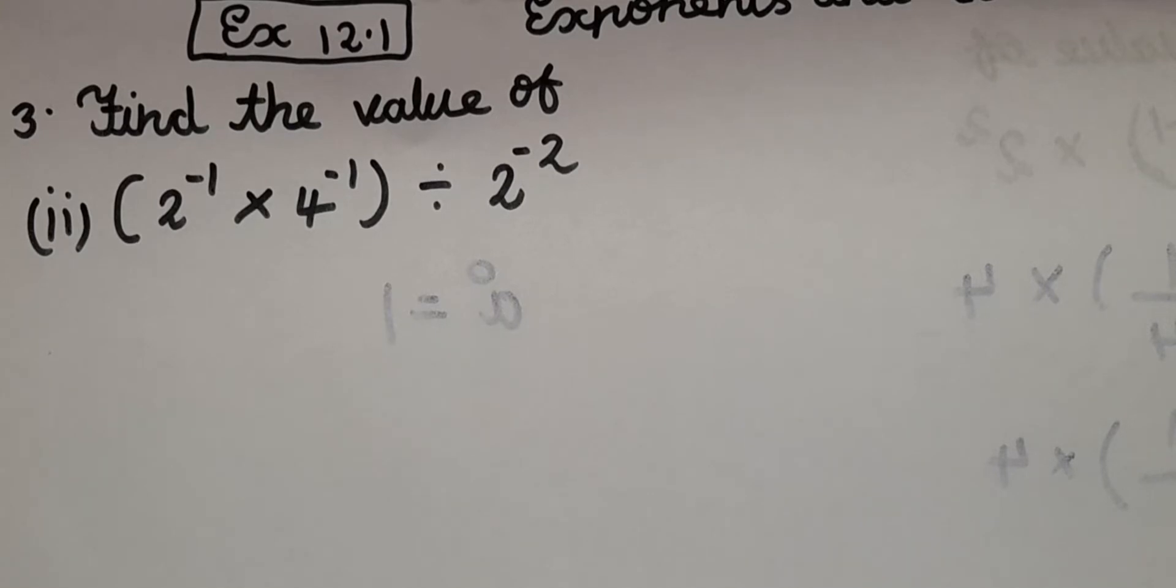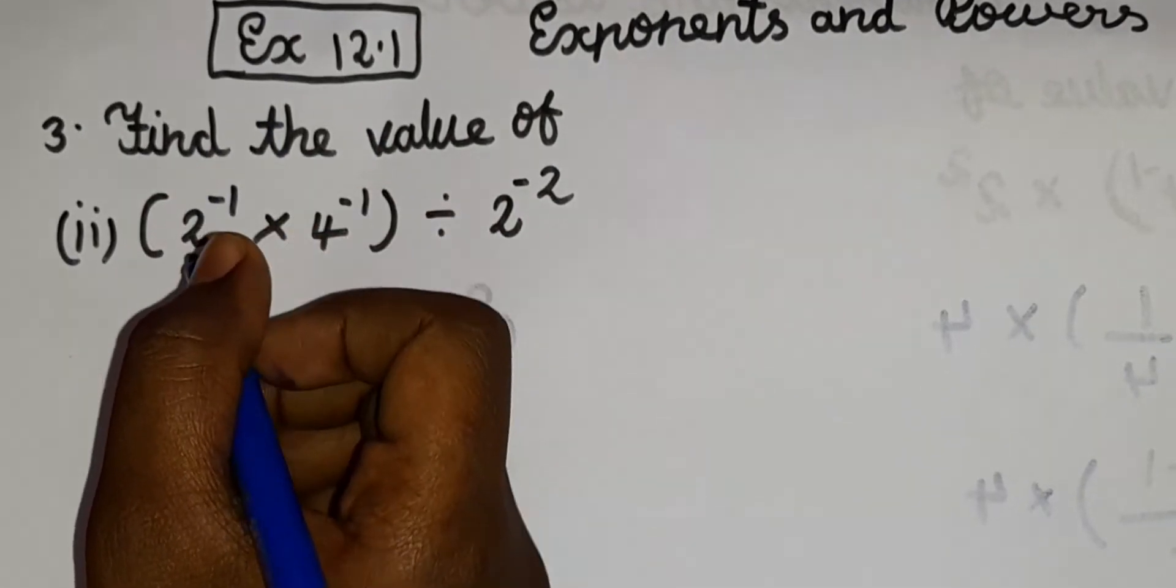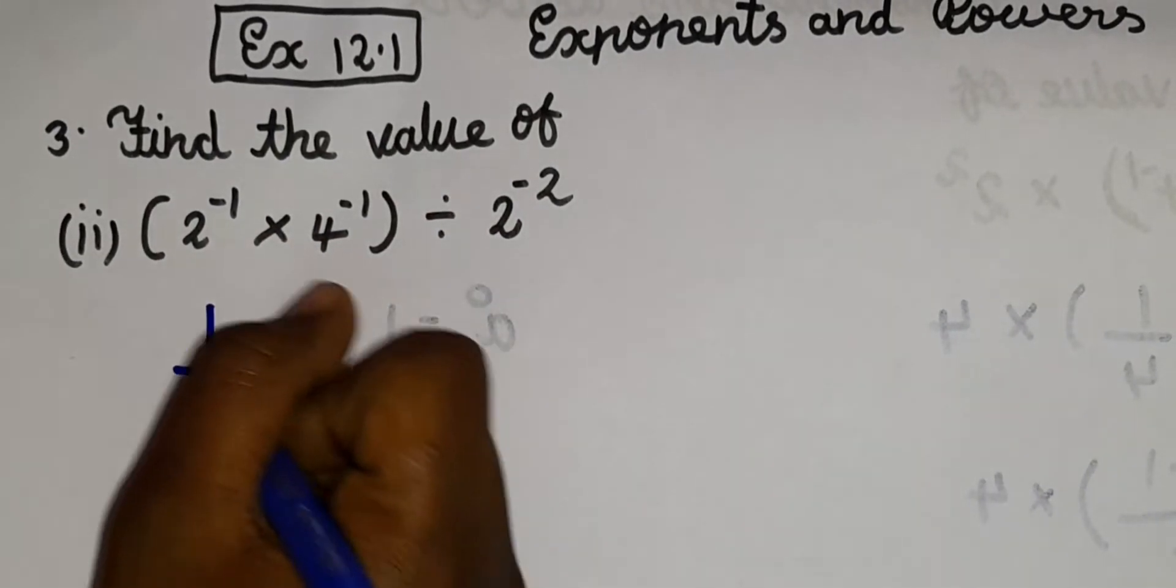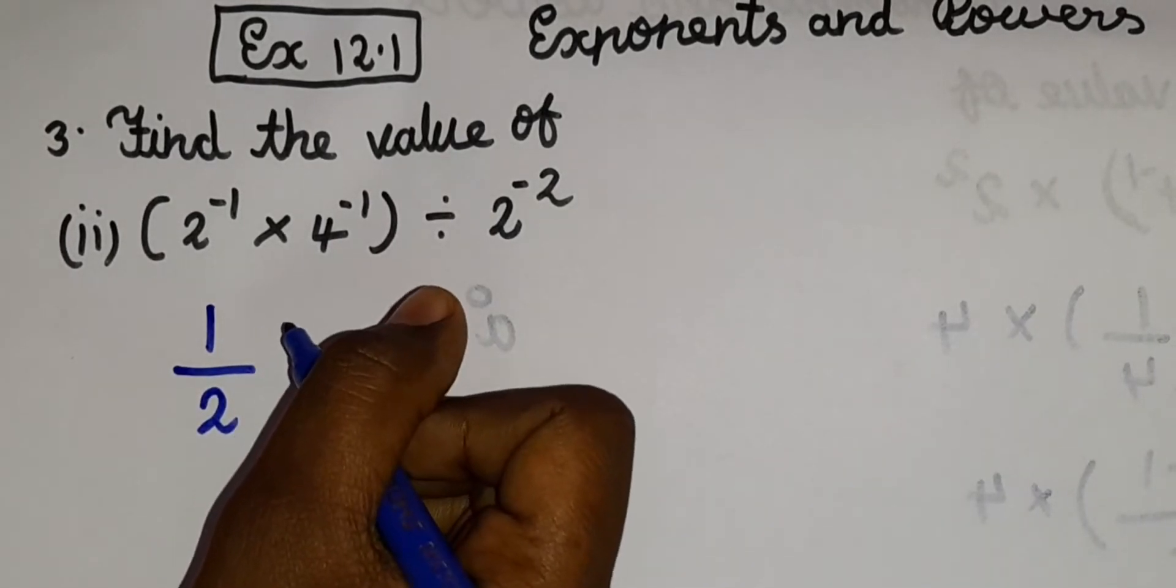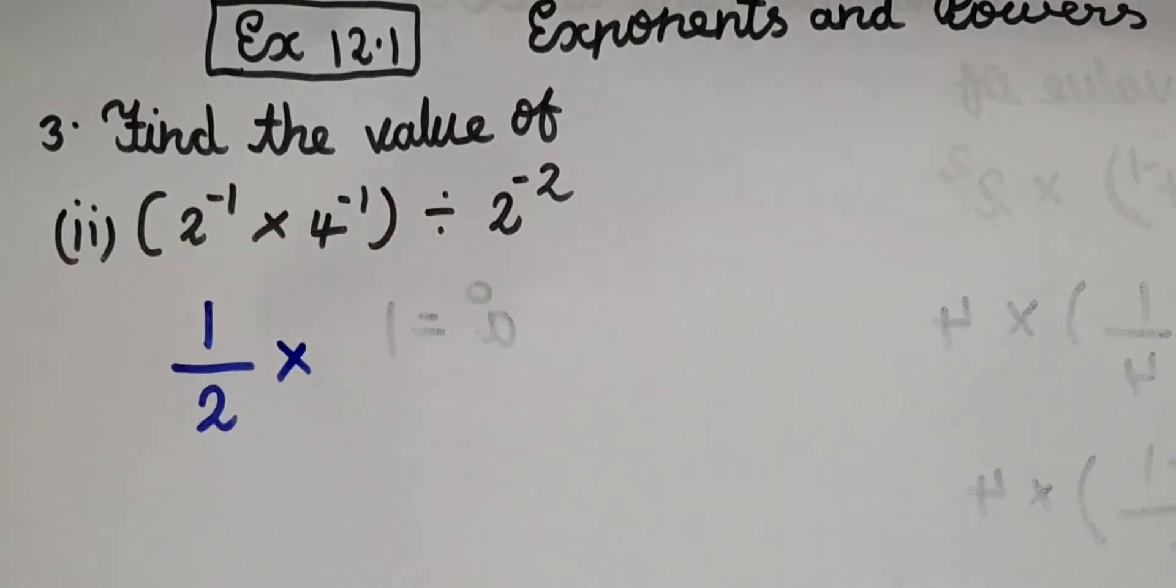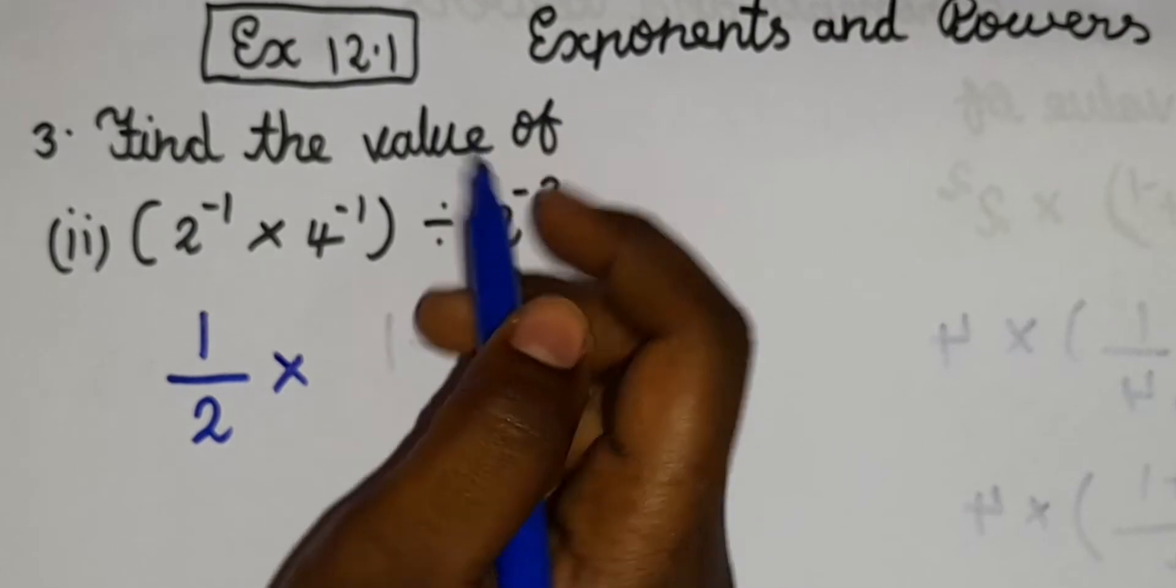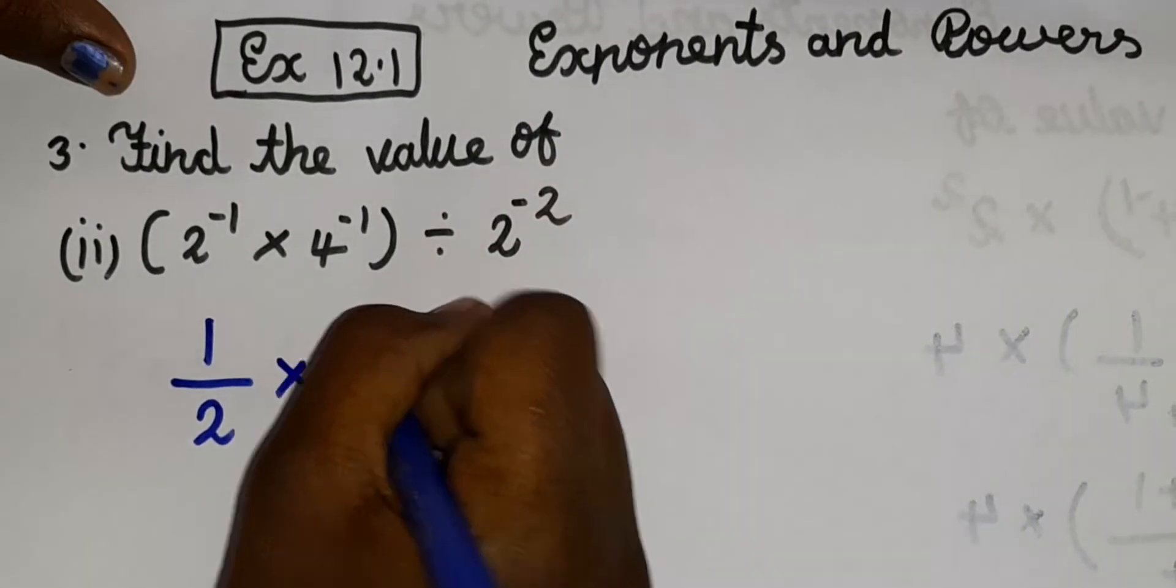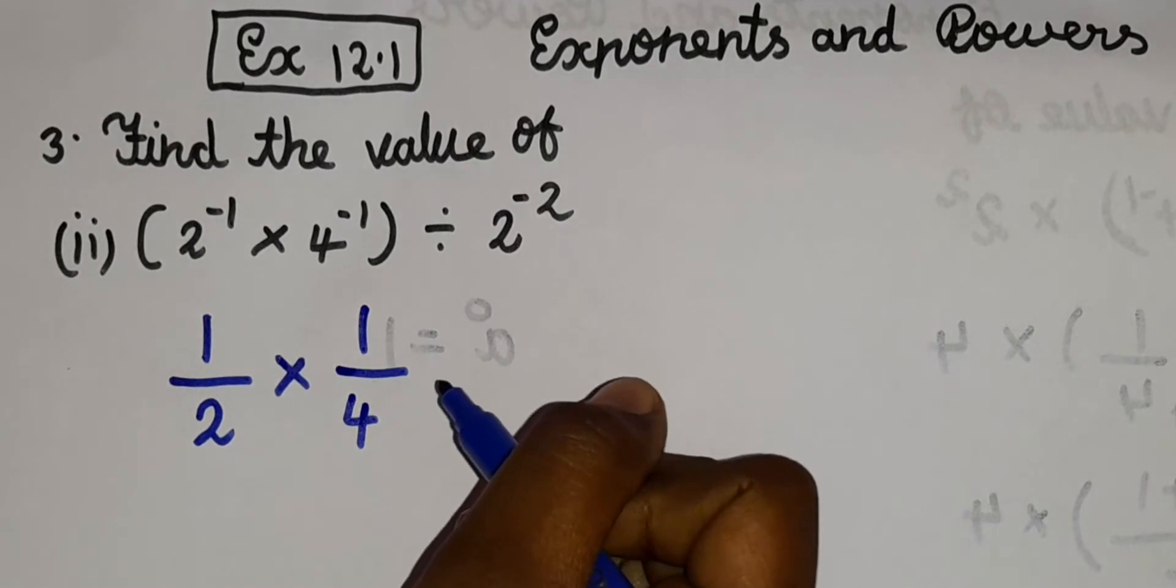When a power is in subtraction symbol, we should write it as 1 by 2 power 1. No need of writing the 1 because it's going to be the same value. So 1 by 2 into, here also we have the minus symbol, which means we should write it as 1 by 4 power 1 or we can write it as 4.